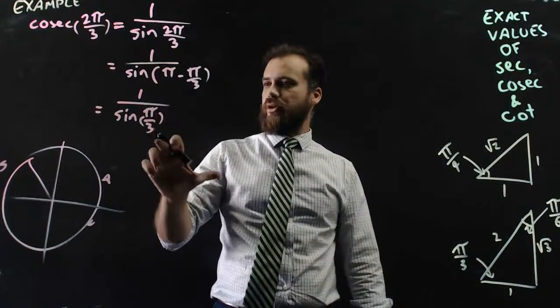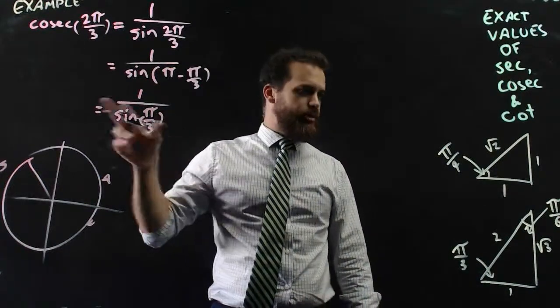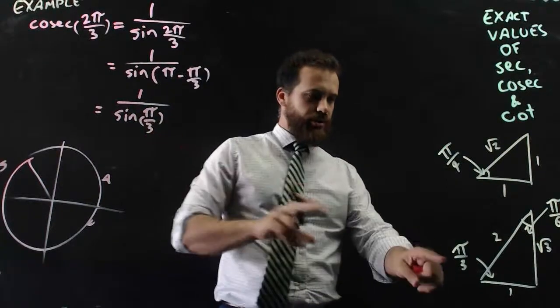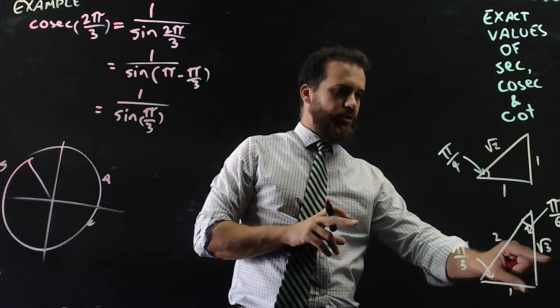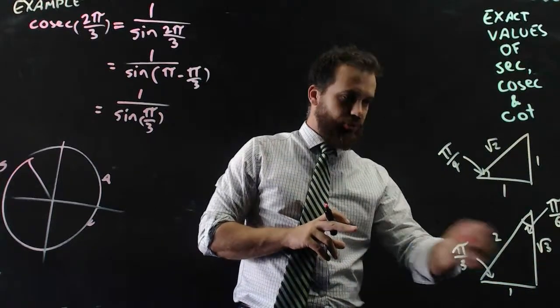Now 1 over sine π/3. I wonder what π/3 is. Sine π/3. So there's π/3. Sine is opposite over hypotenuse, so it's √3 on 2.